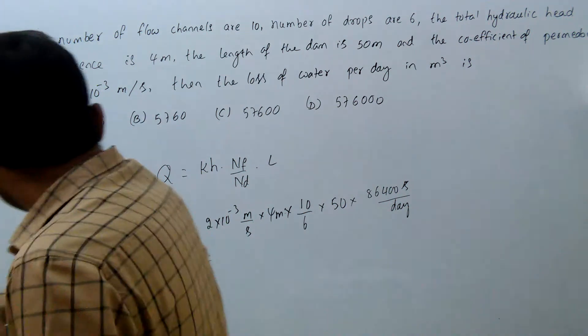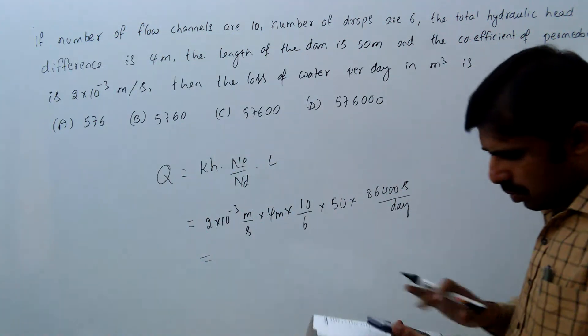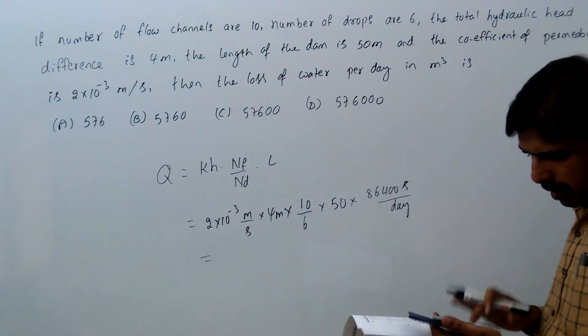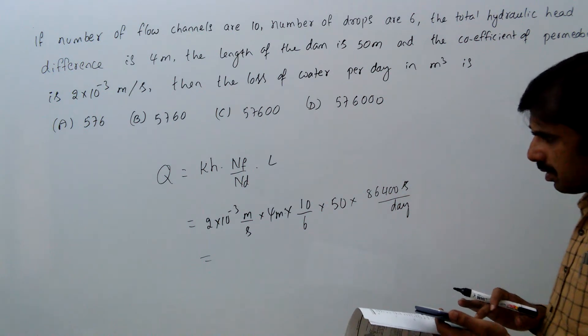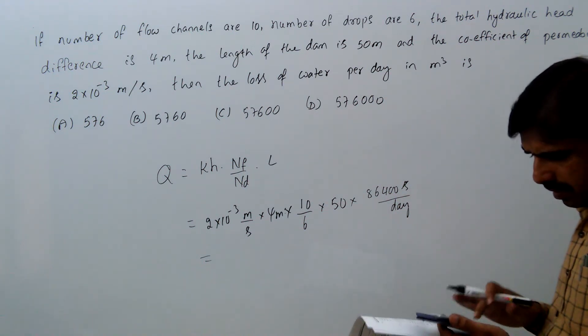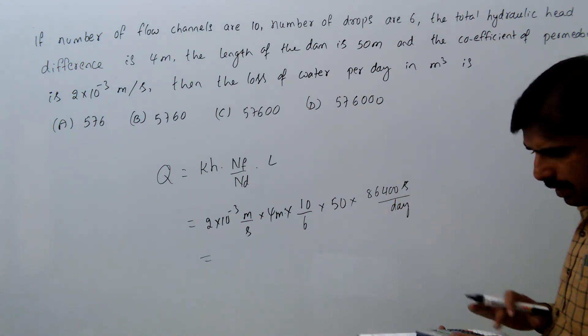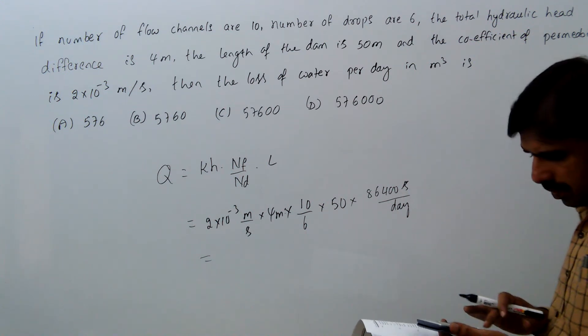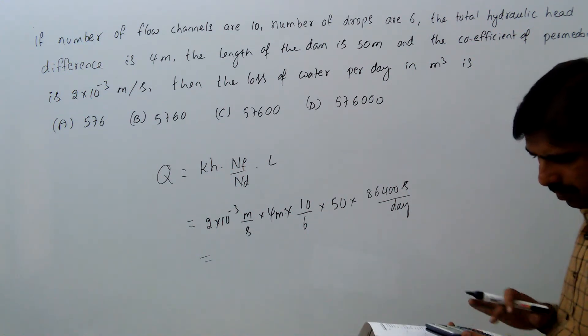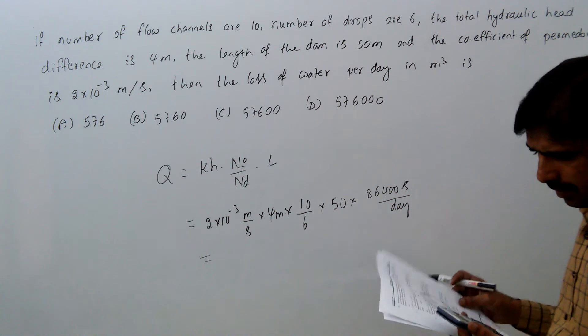So that is 2×10^-3 × 4 × 10/6 × 50 × 86400, that is 57600.